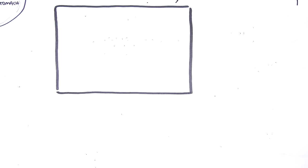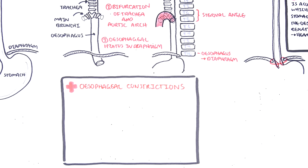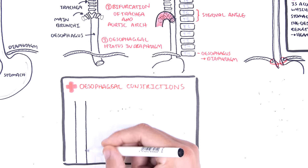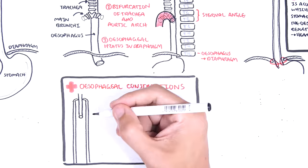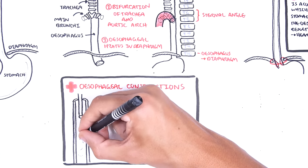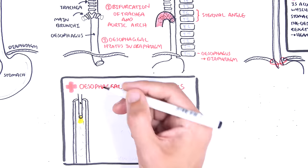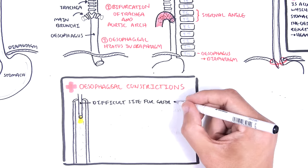The esophageal constriction sites are sites at which you might expect to swallow foreign bodies and these foreign bodies can get impacted, and strictures can occur after swallowing corrosive fluids. These sites can be potentially difficult sites for gastroscopy to pass through.